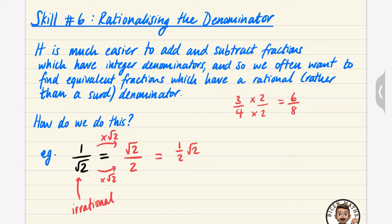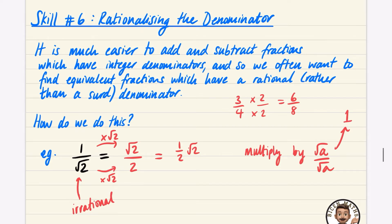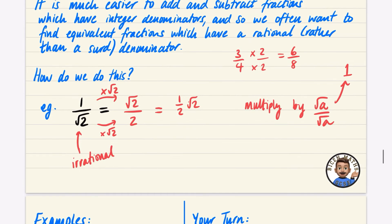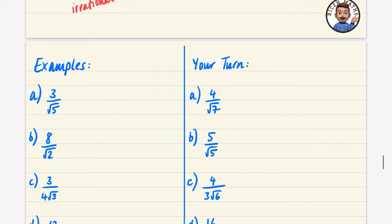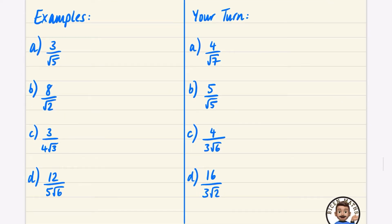To rationalize the denominator, multiply the fraction by root a over root a — remember this is just multiplying by one. So for something like b over root a, you multiply by root a over root a. Let's look at some worked examples, and then you'll have a go at some on your own.